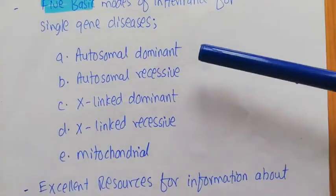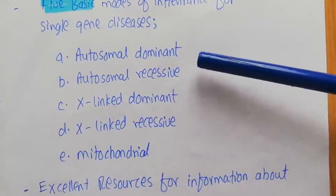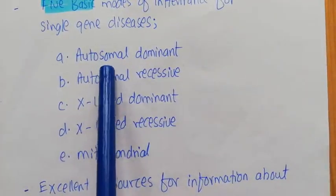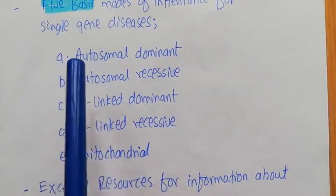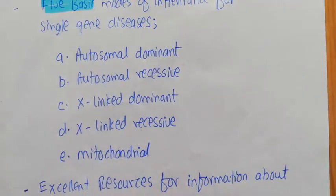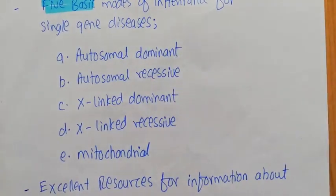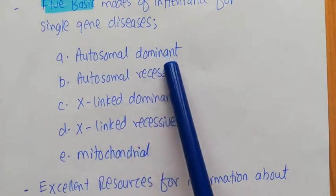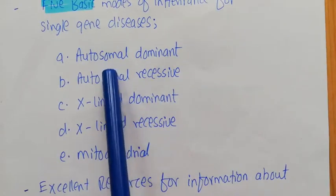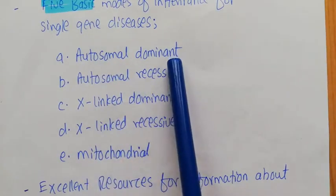In autosomal dominant inheritance, 'autosomal' means the gene for that particular disease is present on an autosomal chromosome and not on a sex chromosome — so you are talking about chromosomes 1 through 22, not the X or Y chromosome. 'Dominant' means that a single copy of that mutated allele is enough to cause the disease in that individual. So autosomal dominant means the gene is on an autosomal chromosome and can express itself in a dominant pattern.